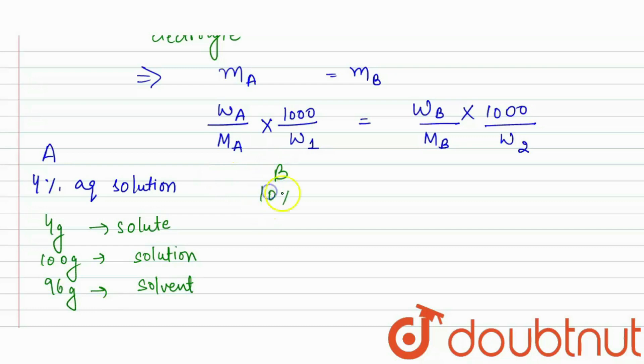Same goes for B. B is 10% aqueous. If it is 10% aqueous, then it has 10 gram of solute in the 100 gram of solution. So, what will be the solvent here? 90 grams.